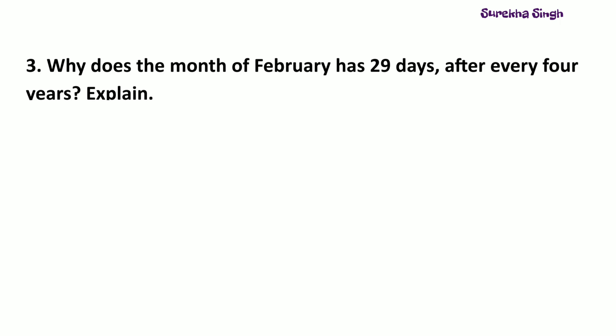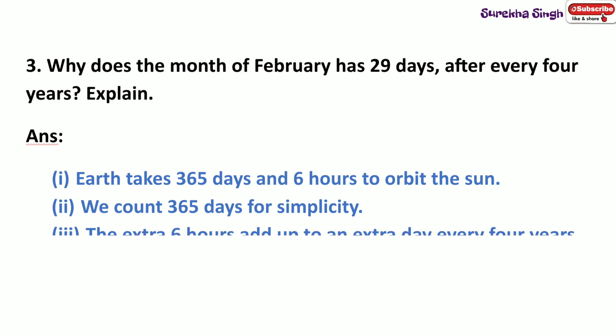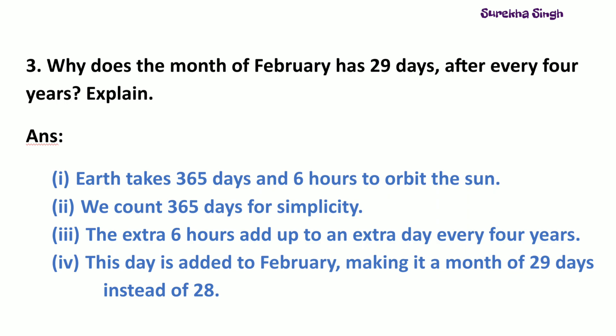Question 3: Why does the month of February have 29 days after every 4 years? The earth completes one revolution in 365 days and about 6 hours. For convenience, we consider 365 days in a year. The remaining 6 hours are added over a period of 4 years till they become 24 hours, or 1 day. This extra day is added to the month of February every 4 years to make it a month of 29 days instead of 28 days.